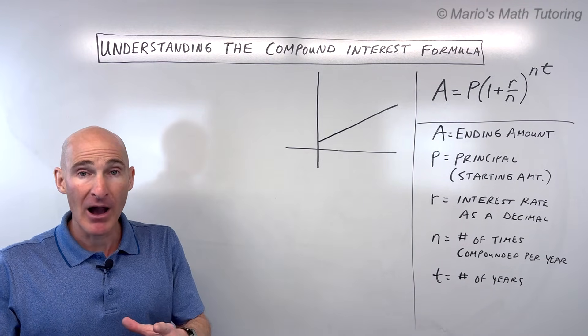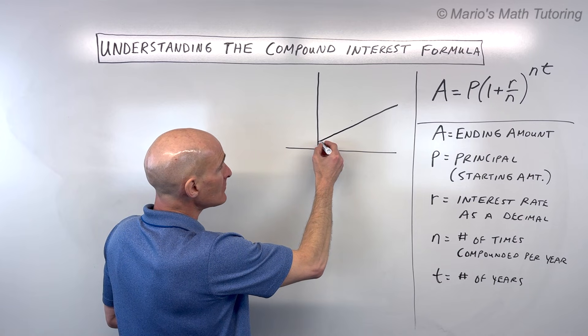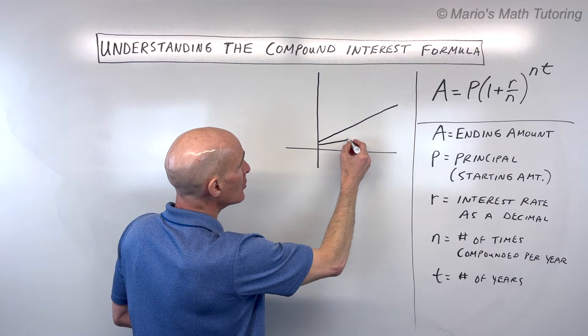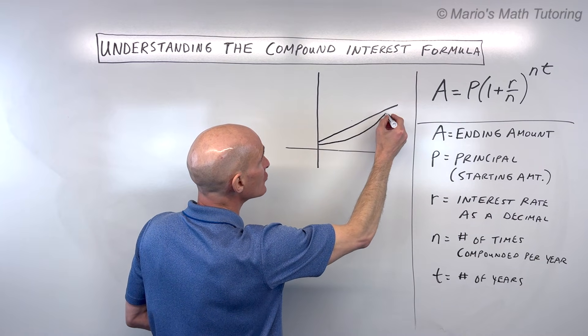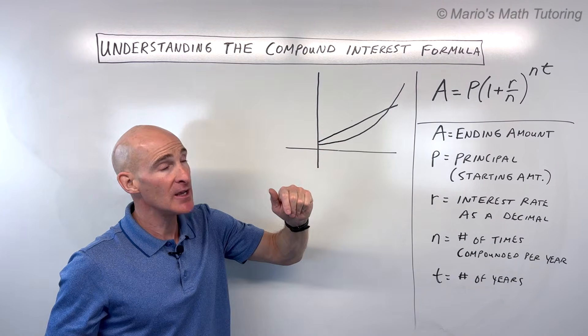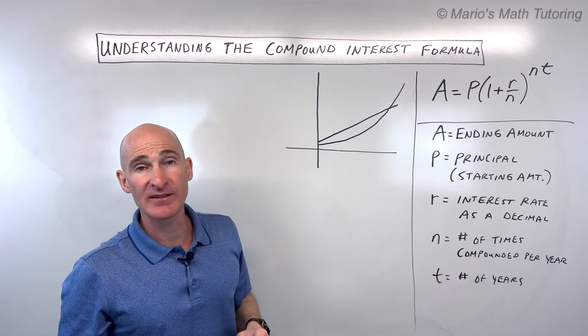But with compounding, what we get is something that's growing exponentially. It might look something like this where it starts off slow and then gradually it starts growing faster and faster. You can see it's going up at a steeper and steeper rate. And so that's the power of compound interest.